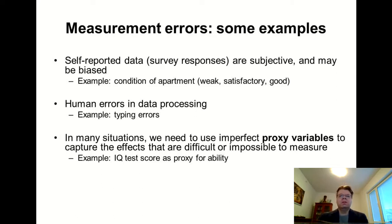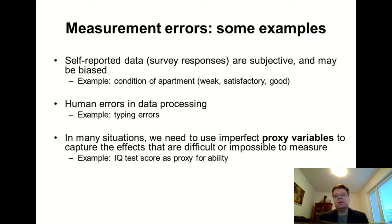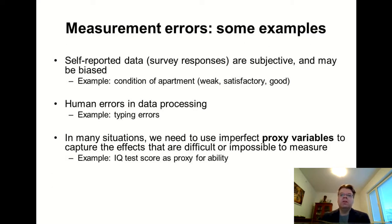Perhaps the most fundamental type of measurement error — even if we could deal with human errors in data processing better and better — is that econometrics has the role of bridging the gap between abstract economic theory and empirical studies. Very often in economic theory there are abstract concepts such as inflation or interest rate, but in the real world we need to measure inflation by some kind of price indices. There might be several different price indices, and it's not always clear which is most appropriate for measuring inflation in a certain application.